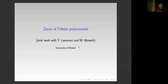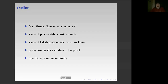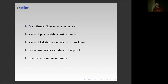Thank you very much for the invitation. I'm honored to speak in this seminar. The main theme of the talk is the law of small numbers — giving yet another example of a phenomenon where something seemed absolutely true at the beginning but fails miserably as we go along. The conventional outline is that I'll start with classical results on zeros of polynomials, then move to zeros of Fekete polynomials, mention new results and ideas, and then some speculations and failed attempts to prove things.